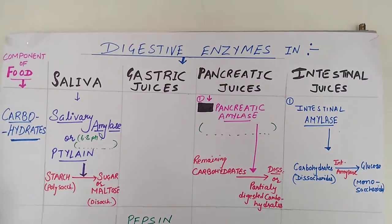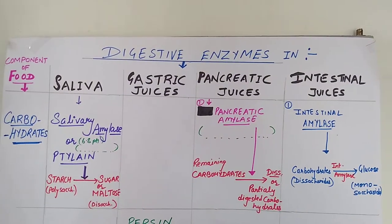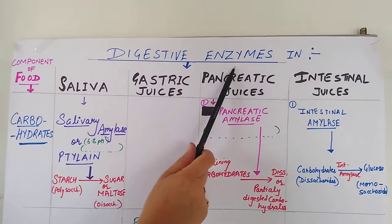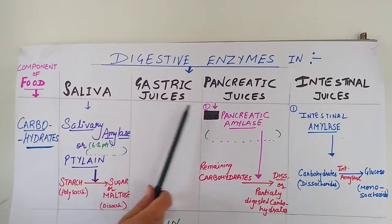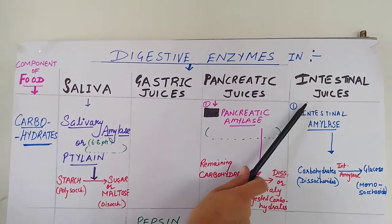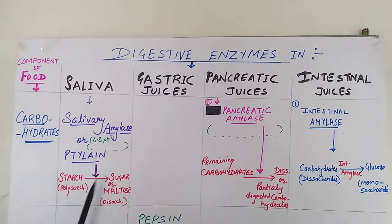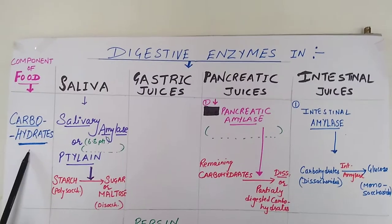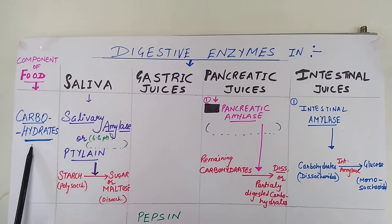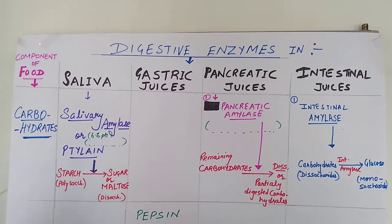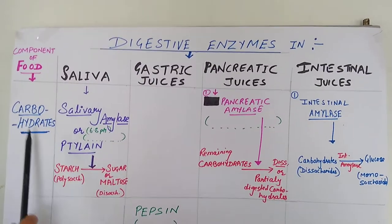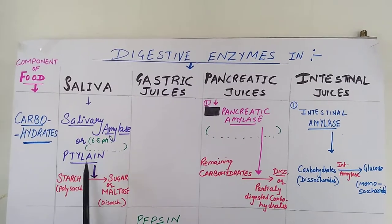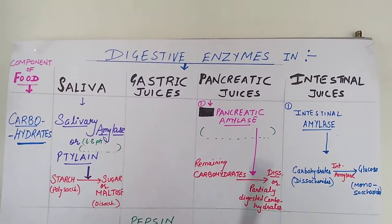Now, with the help of this table, I want to explain different digestive enzymes secreted by different digestive juices which are secreted by our alimentary canal. There are different components of food such as carbohydrates, proteins, and fats, and we will see how the enzymes are going to act on these food substances.